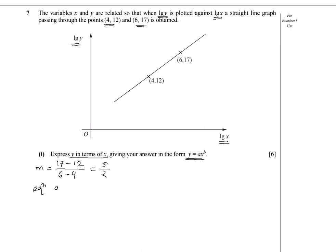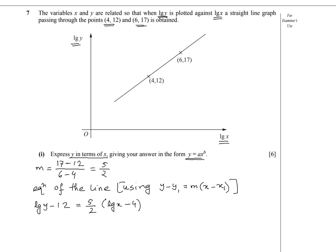We can write the equation of the line using y minus y1 equals m times (x minus x1). Here it will be log y and log x. So we write log y minus 12 equals 5 over 2 times (log x minus 4). Expanding: log y equals 5 over 2 times log x minus 10 plus 12.